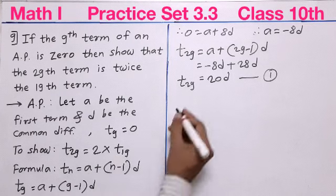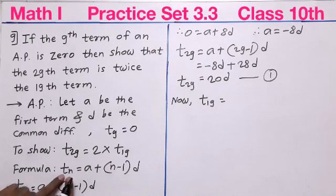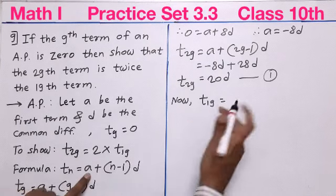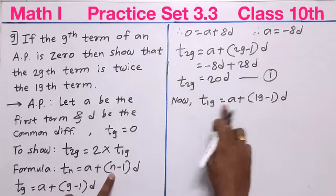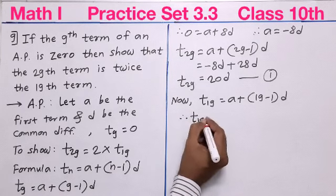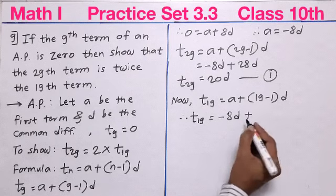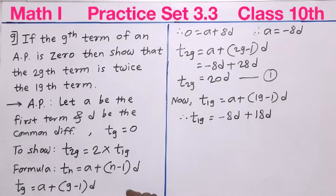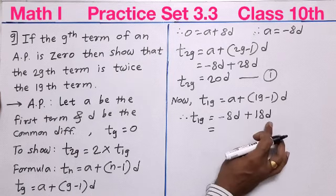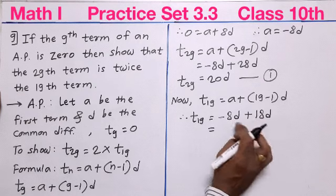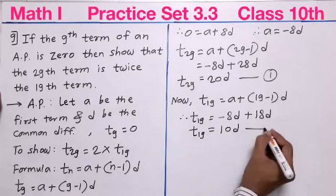For T19, putting n = 19: T19 = a + (19 minus 1) × d = a + 18d. Substituting a = negative 8d: T19 = negative 8d + 18d = 10d. We give this as equation number 2.